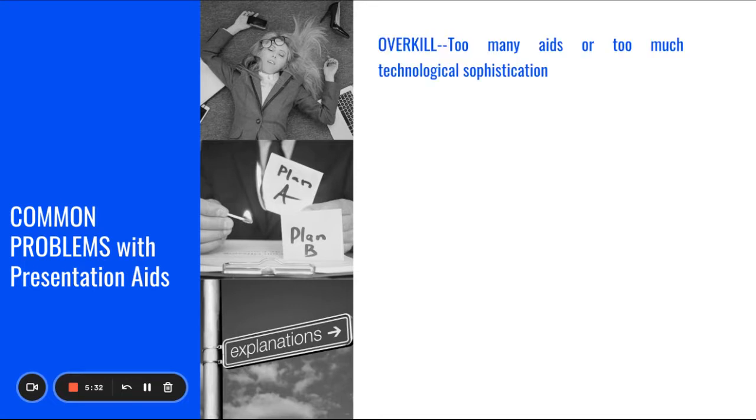Common problems with presentation aids. Overkill. Too many aids or too much technological sophistication. Again, I remember years ago when I was in college, PowerPoint was fairly new back then. And it did a lot of fun things. It had a lot of actions. It had a lot of things that you can incorporate. And I remember seeing presentations from other classmates where they incorporated all of it into one presentation. So they wanted every bullet point to come in to take an action or to spin or to bounce around the screen. Don't do too much. Simplicity is professional. So don't overkill and have too many presentation aids.